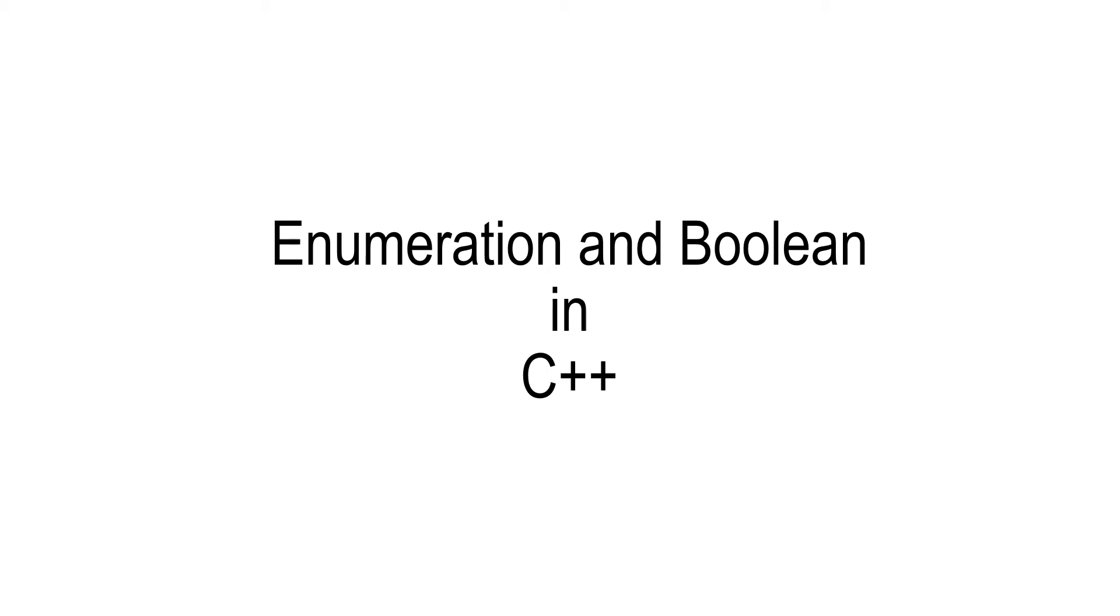We are going to see two important data types in C++. They are enumeration and boolean.